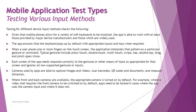When a user places one or more fingers on the touch screen, the application should interpret that pattern as a particular gesture or command. Typical gestures include press or touch, double touch, multiple touch, swipe, tap, double tap, drag, and pinch open or close. Each screen of the app needs to respond correctly to gestures and other means of input appropriate for that screen, and ignore all non-supported gestures.